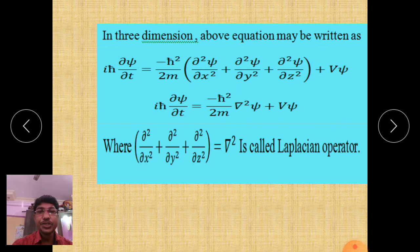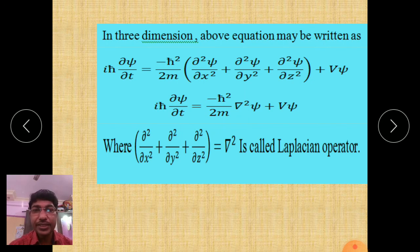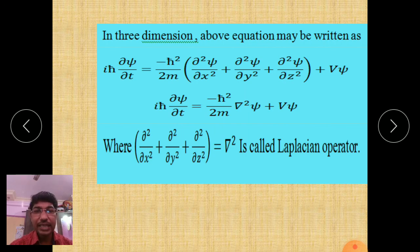In this video, we have seen what the Schrödinger equation is, how many types of Schrödinger equations there are, and the derivation of the Schrödinger time dependent form. In the next video, we will discuss the Schrödinger time independent form. Thank you.